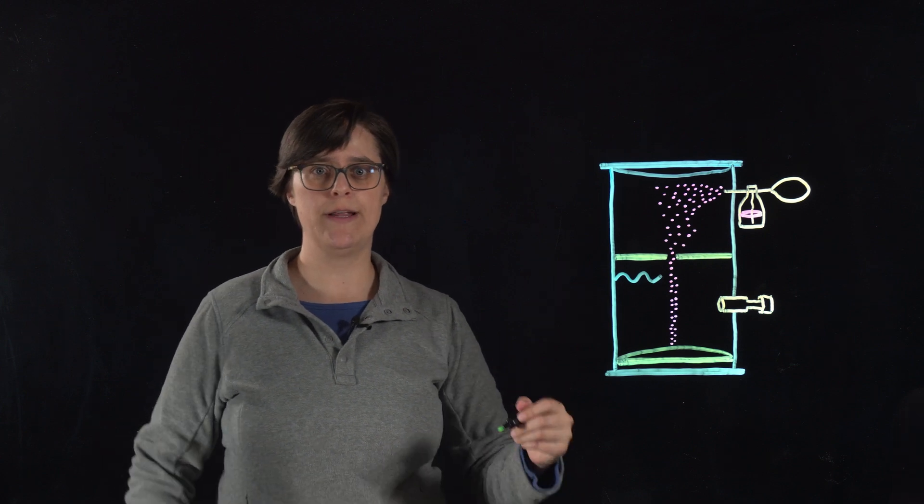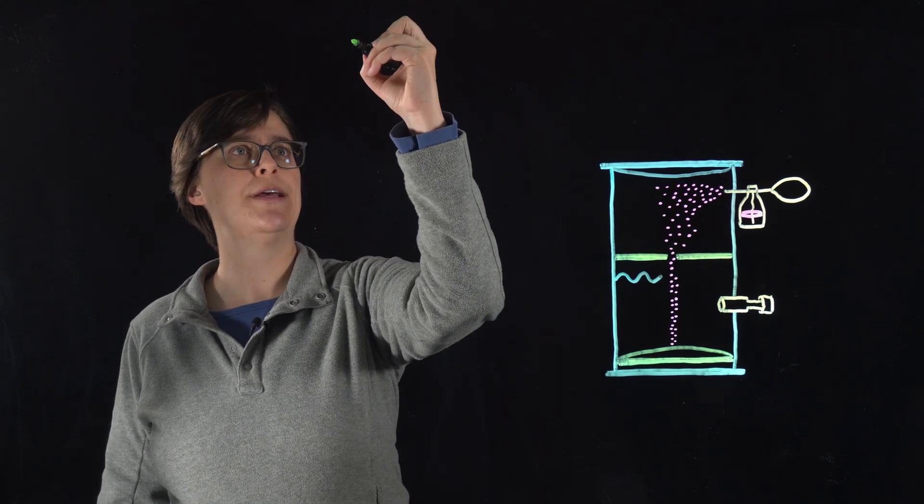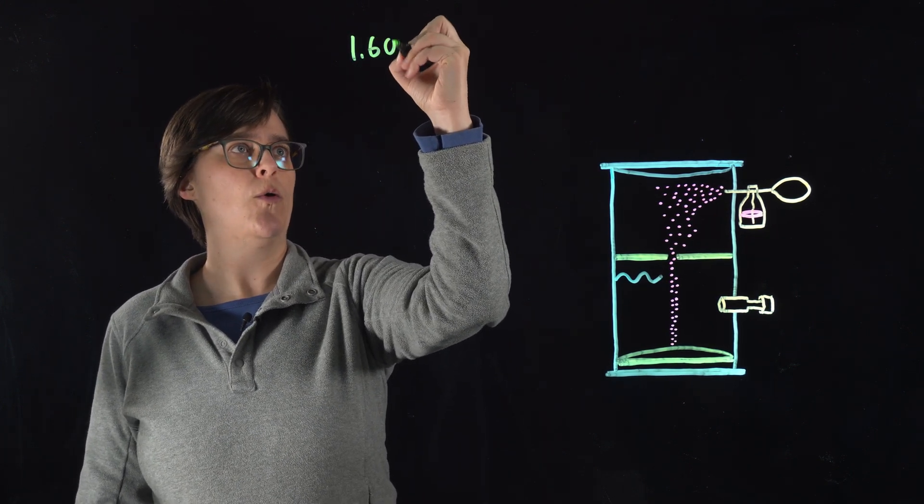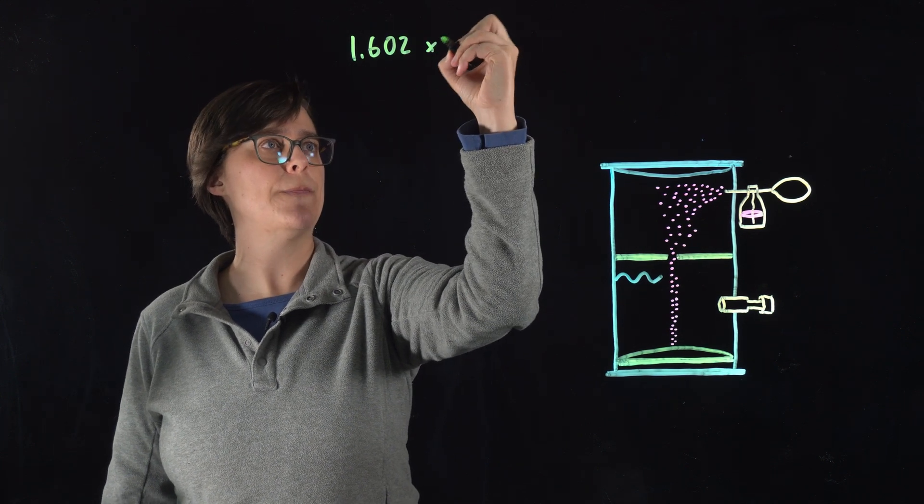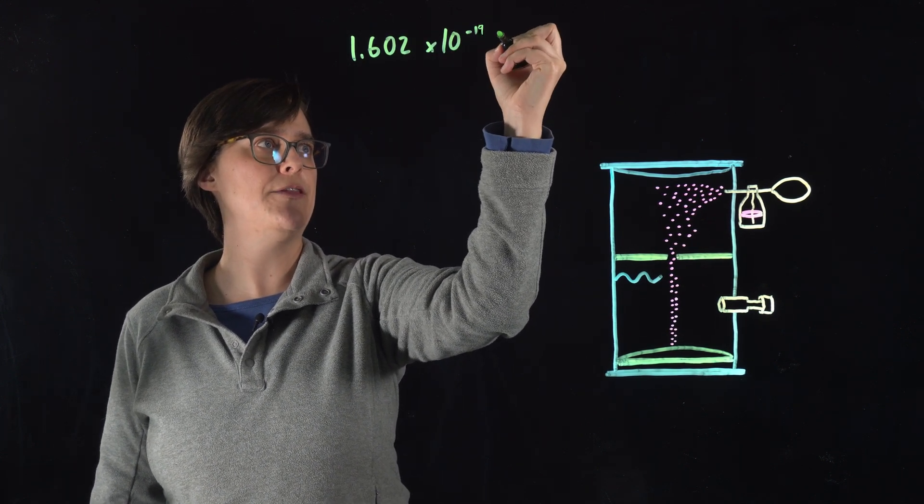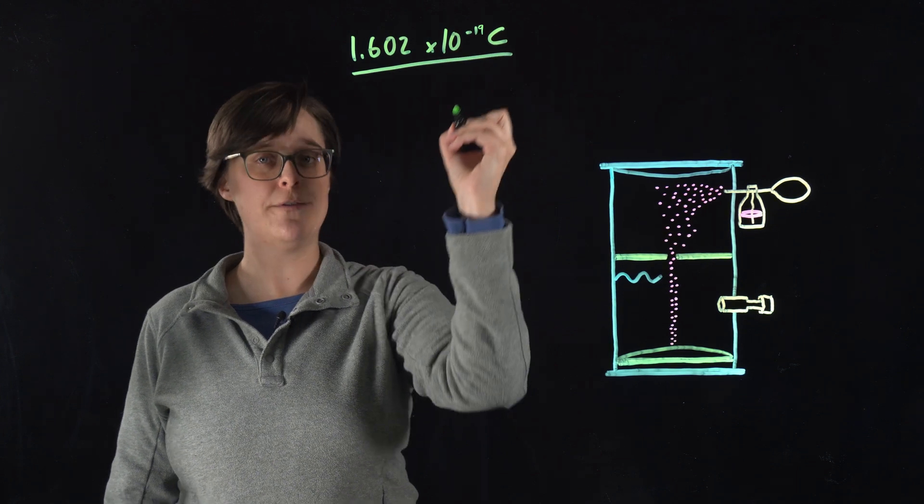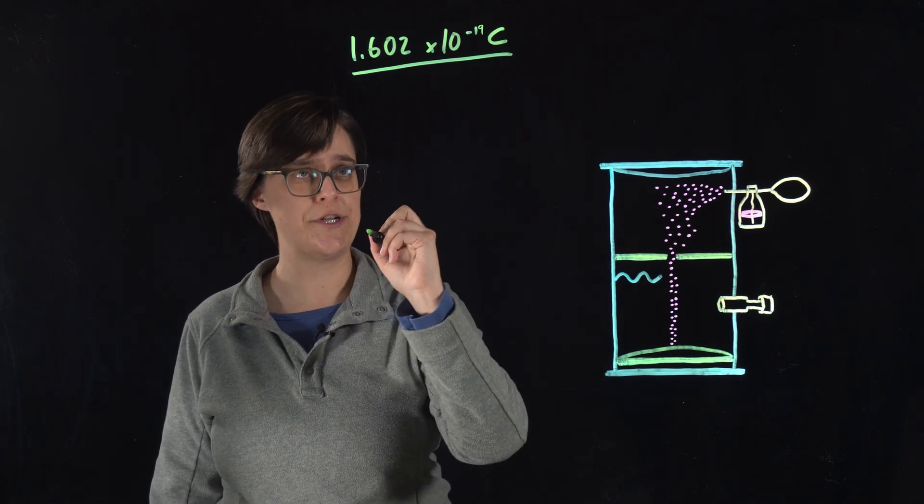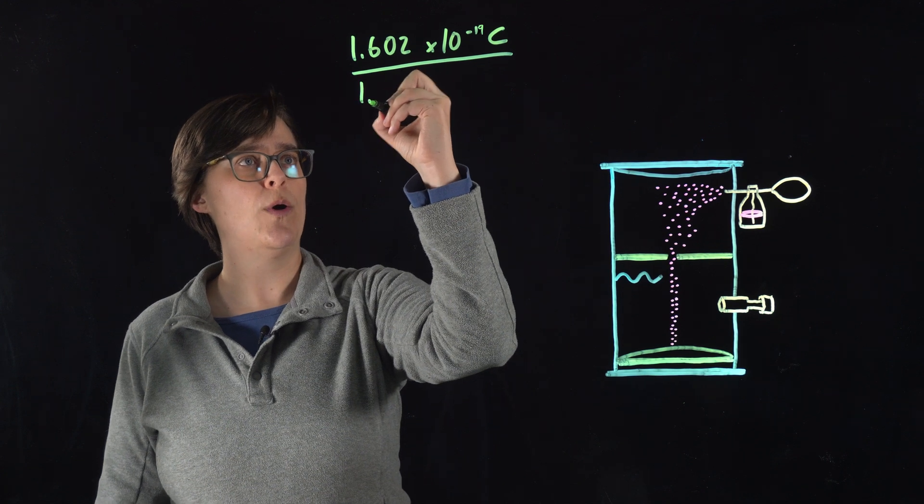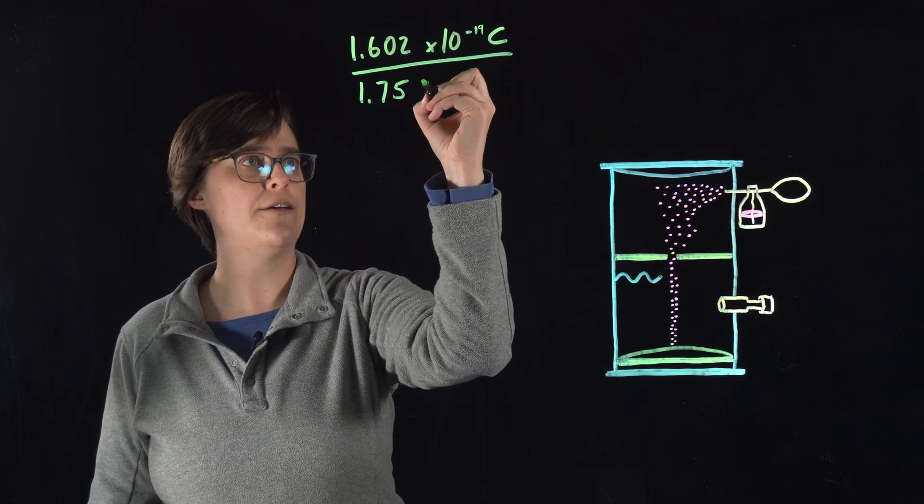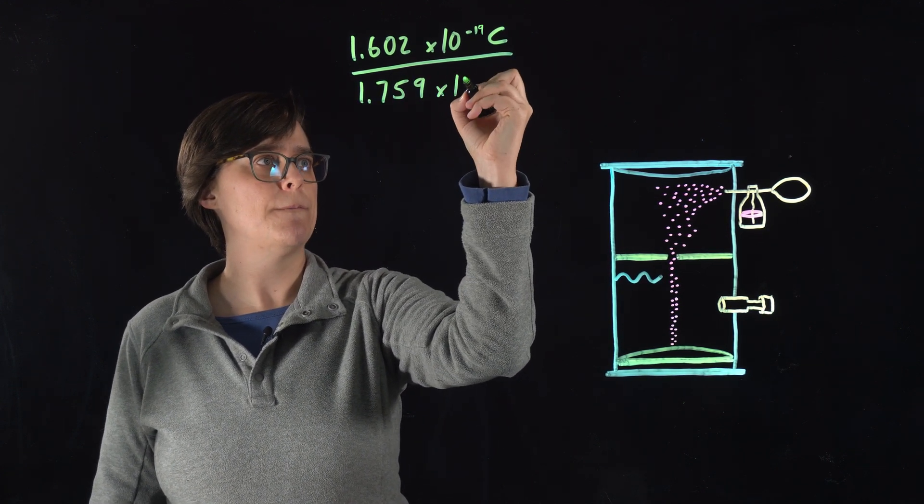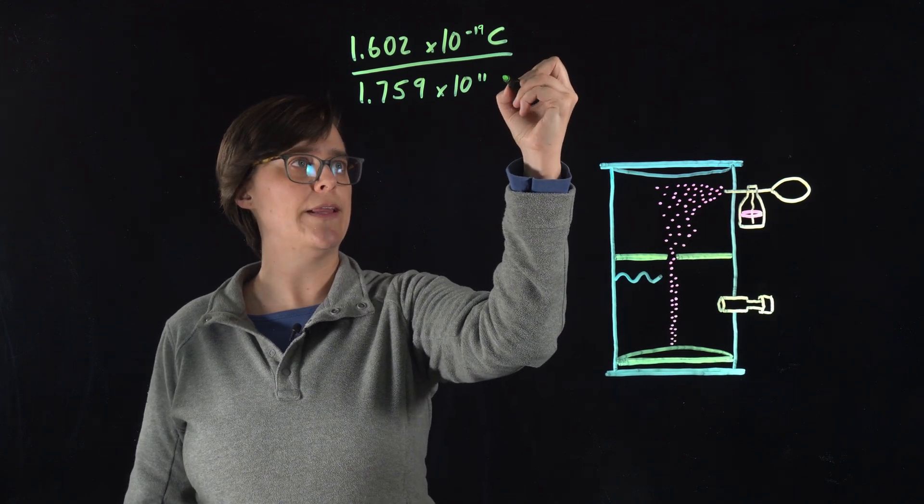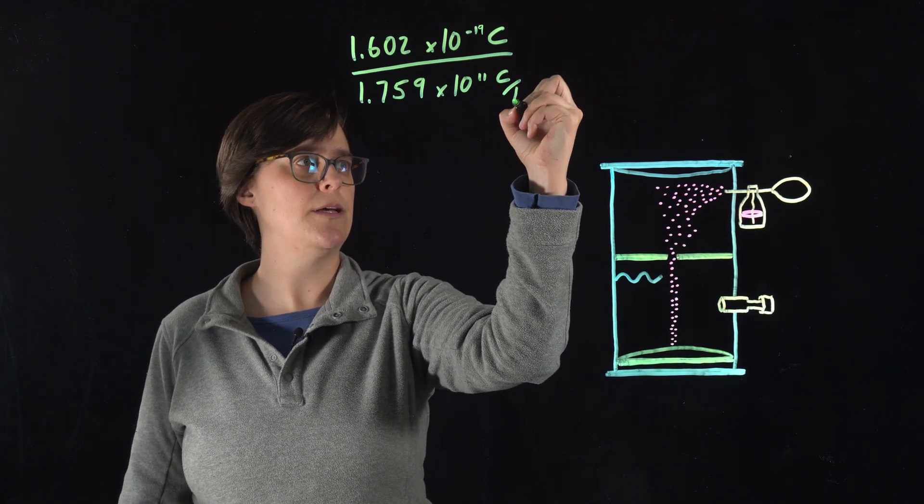To find the mass of an electron, we take the charge that Millikan found, 1.602 times 10 to the minus 19th Coulombs, and we divide it by the charge to mass ratio that J.J. Thompson found, 1.759 times 10 to the minus 11th Coulombs per kg.